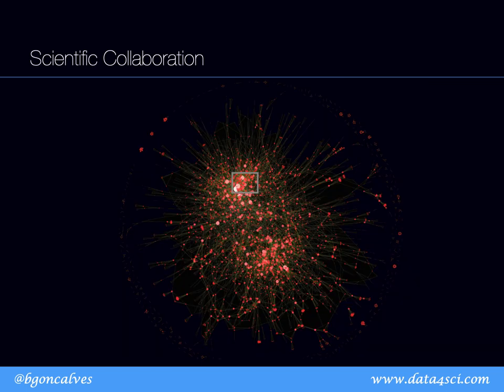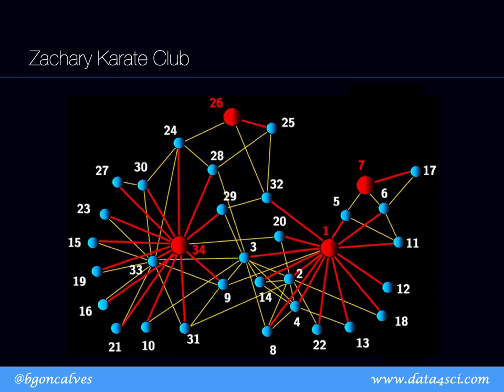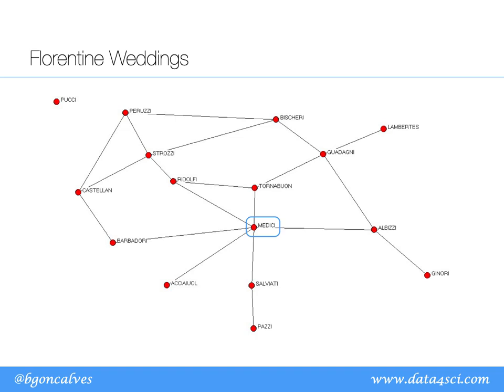Another good example is scientific collaborations, where each node is a scientist and two scientists are connected whenever they co-author a paper. For this specific dataset we use the Physical Review Letters database. Another historical example is Florentine weddings, describing marriage relationships between families in Florence, Italy. This helps us understand how the Medici became so prominent — they were extremely central in this network and able to create strategic alliances.